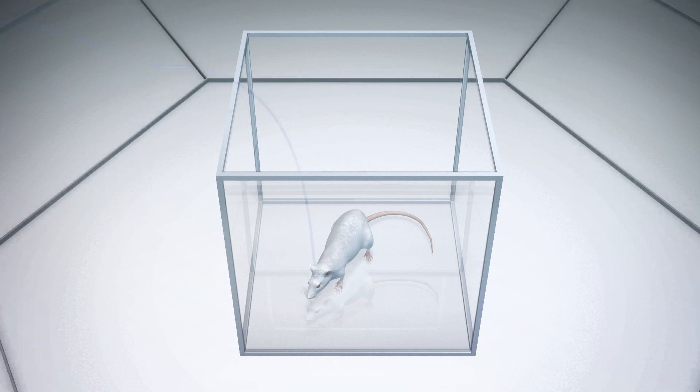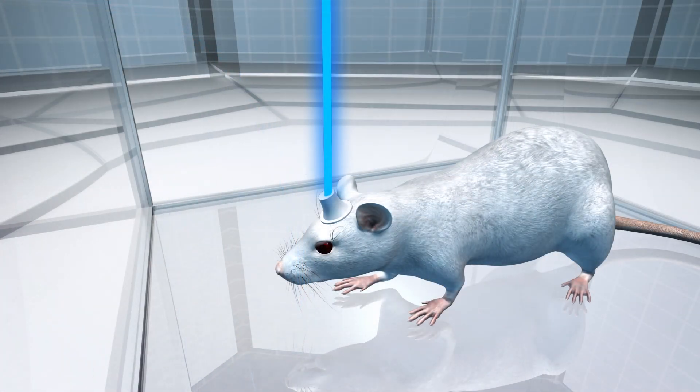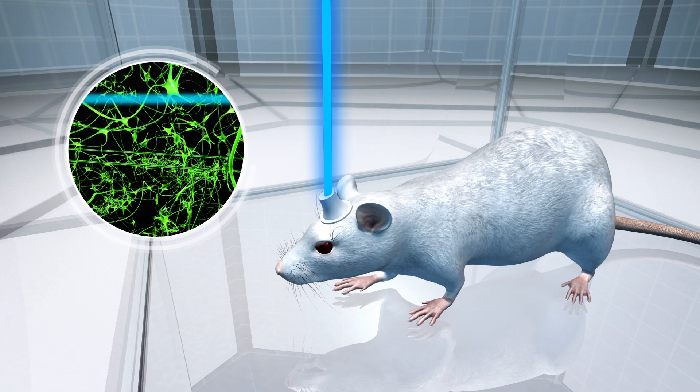The team then used a biological technique called optogenetics to erase memories related to cocaine use. Optogenetics uses light to alter cell behavior. It allows scientists to turn neurons on or off selectively.